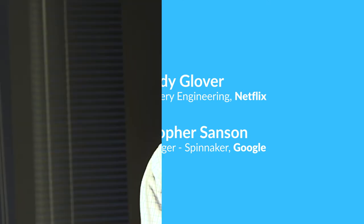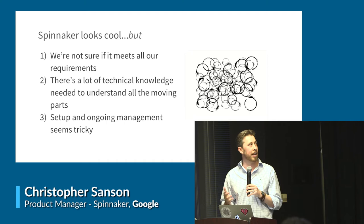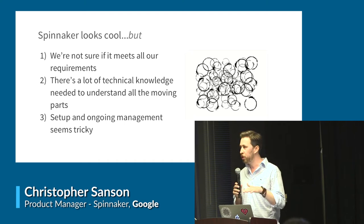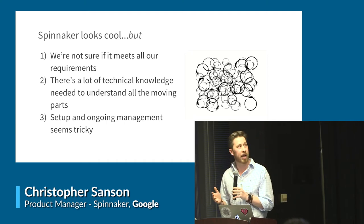Spinnaker looks cool, but it was open sourced in November 2015. I call it the Benjamin Button problem - it was sort of fully mature but skipped adolescence. It was used in production by Netflix for one of the biggest properties on the web, but we skipped some things others care about, like authorization, onboarding, and setup. A lot of potential users looked at it and said it's cool but missing some basic functionality.